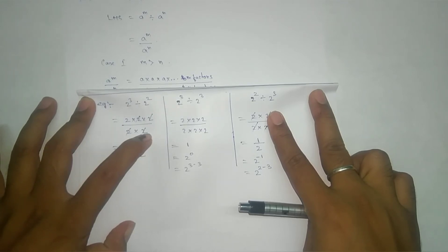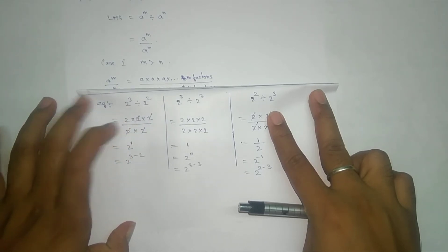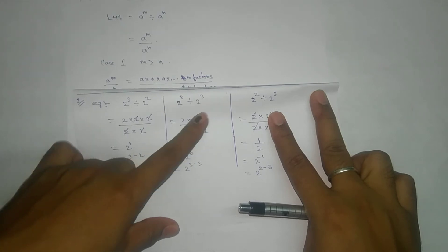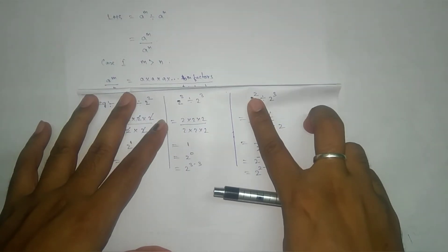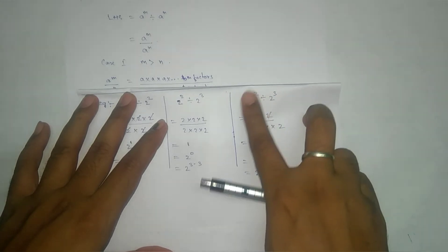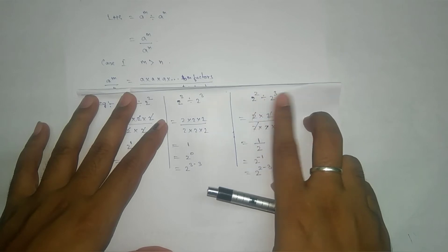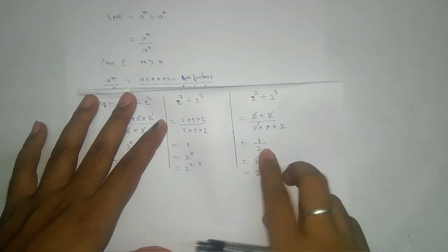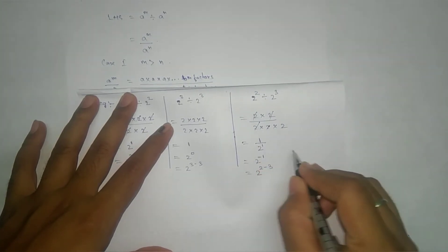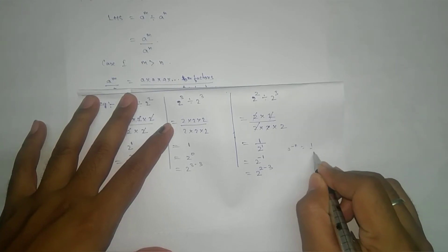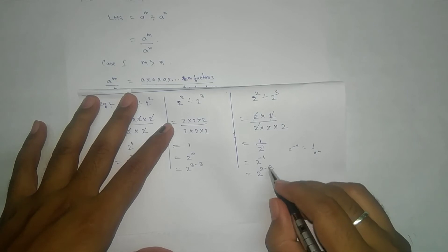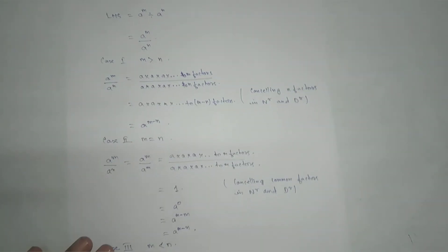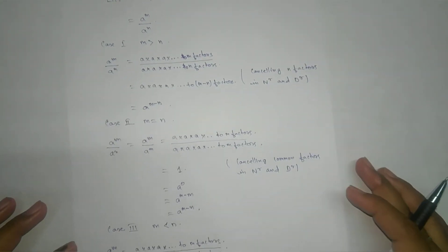For example, 2 to the power 3 divided by 2 to the power 2: we write 2 three times in the numerator and two times in the denominator, and the common factors cancel to give 1, leaving 2 to the power 1. When the exponents are equal — for example the same number of times — cancellation gives 1, which means 3 minus 3 equals 0, giving a to the power 0. For 2 to the power 2 divided by 2 to the power 3, the numerator exponent is less than the denominator exponent, so we get 1 by 2, which can be written as 2 to the power minus 1 using the formula a to the power n equals 1 by a to the power n.